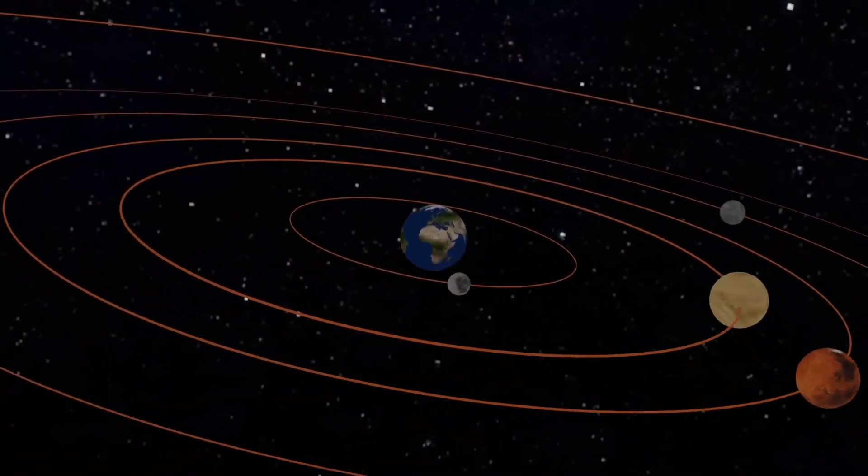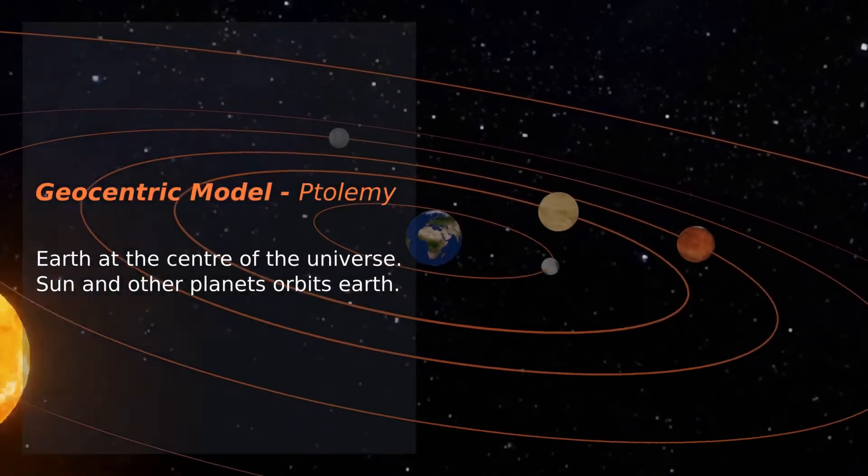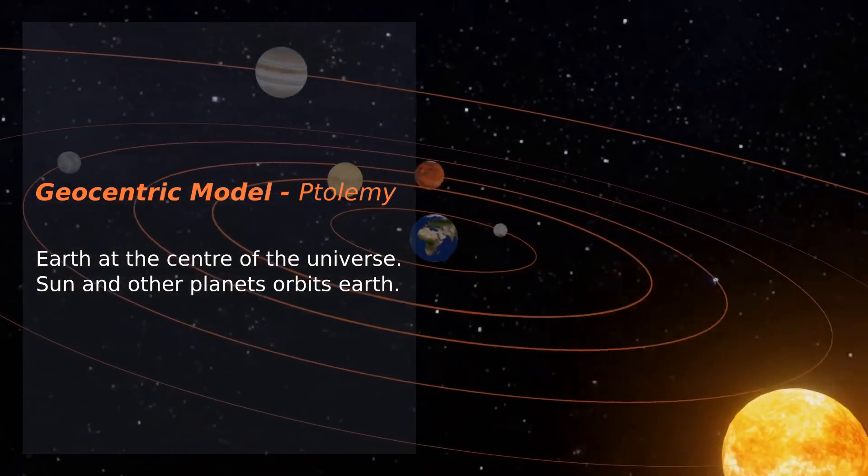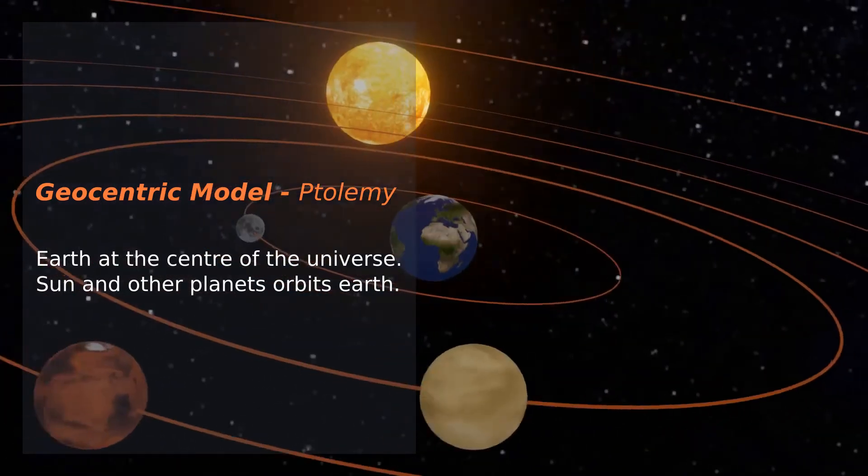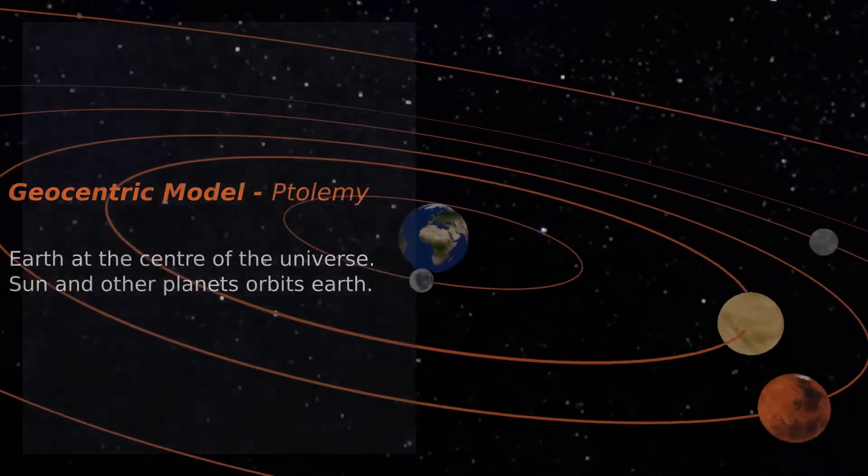For many ages people believed Earth to be at the center of the universe and all other planets and the sun revolving around it. This was called geocentric model, meaning earth-centered.